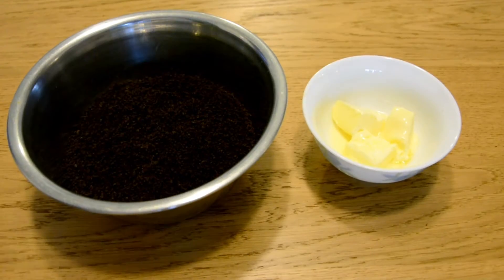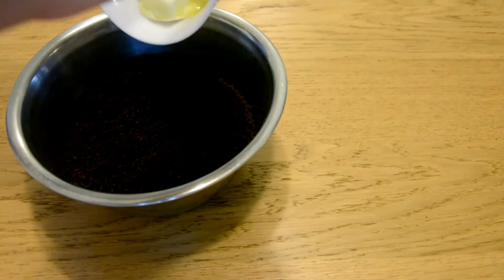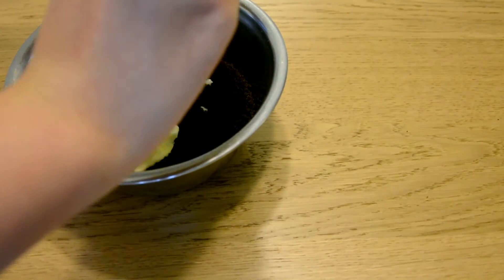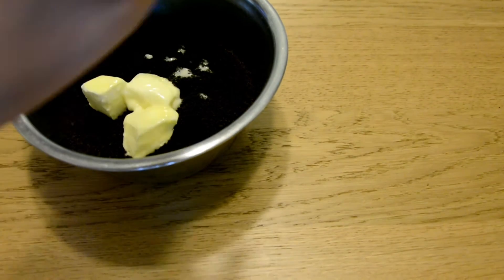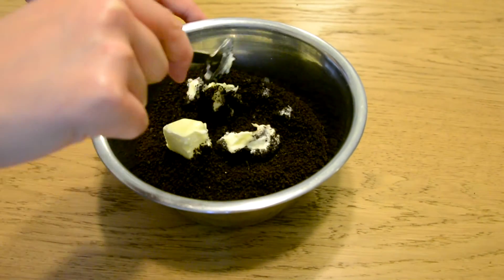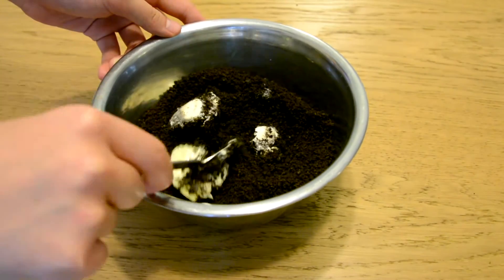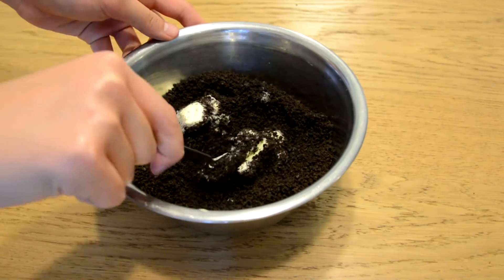Then you want to combine your Oreo crumbs with half of your butter. Since you have one cup, you'd want to use half of it. This part is quite tricky - you just want to mix the butter into the Oreos. I actually ended up using my hands because it was a lot easier to combine than just using a spoon.